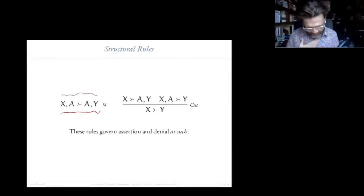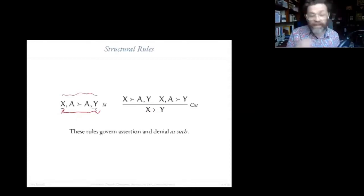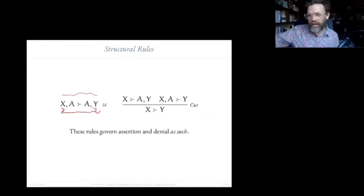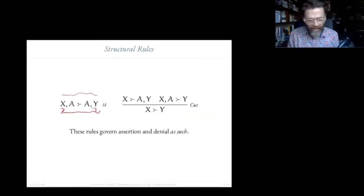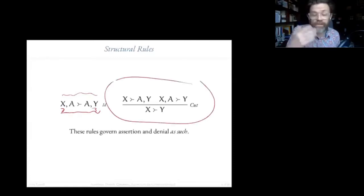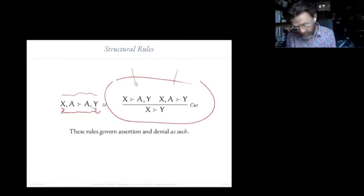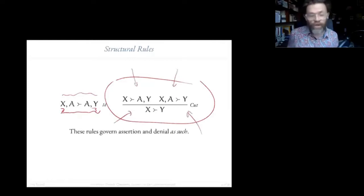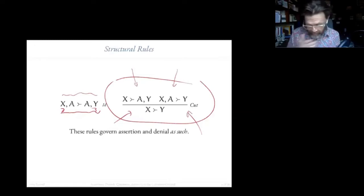These extra things on the left and right are just saying: you're not going to get out of a clash by adding more commitments — by asserting other things or denying other things. You're not going to get out of the clash when you've asserted A and denied A. The only way out is to withdraw one of those. And the rule of cut is a structural feature not looking inside the judgments at particular contents, and there are lots of different ways to understand it.